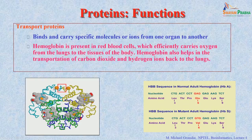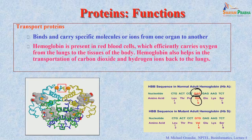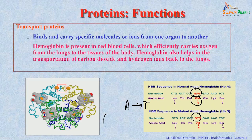For example, here you can see GAG codes for glutamic acid. If it is converted to GTG — where A is changed to T — then glutamic acid is changed to valine.